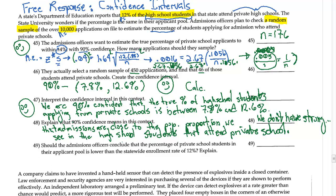Should the admissions officers conclude that the percentage of private school students in their application pool is lower than in the statewide enrollment of 12%? No. Because 12% is in the interval. Short and sweet.